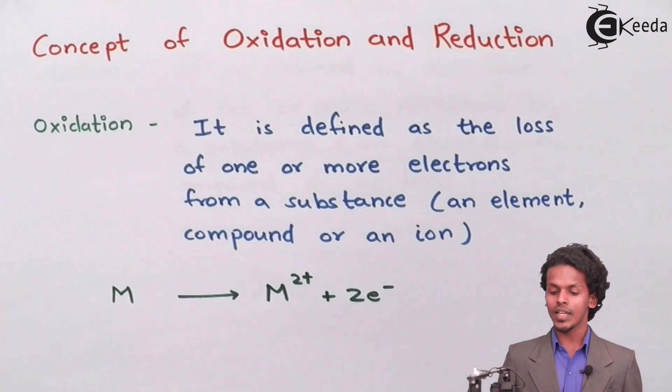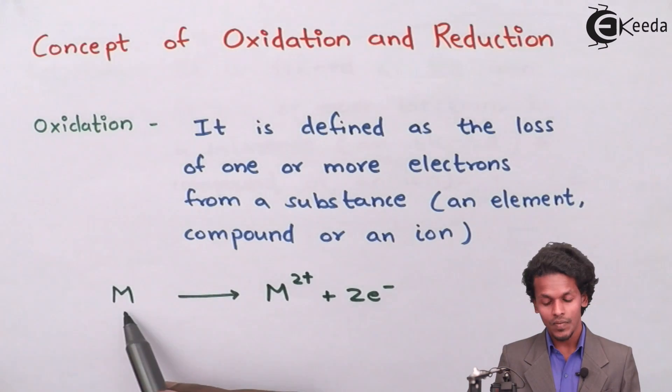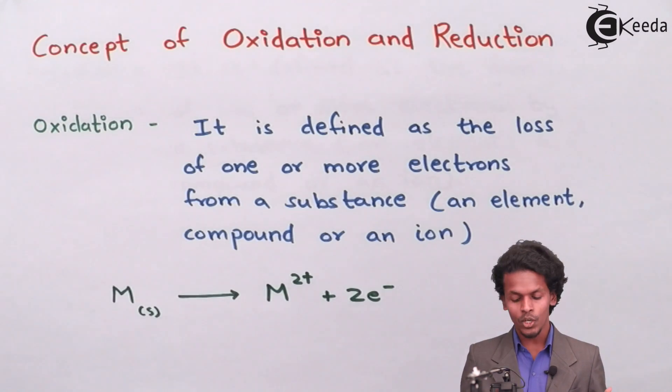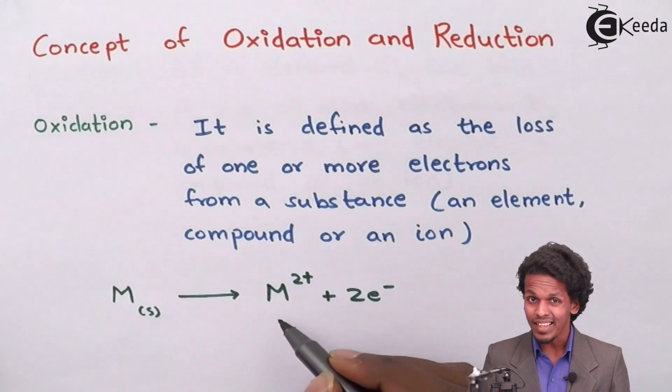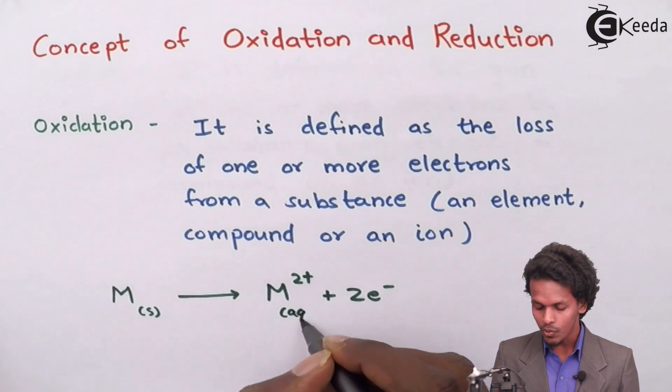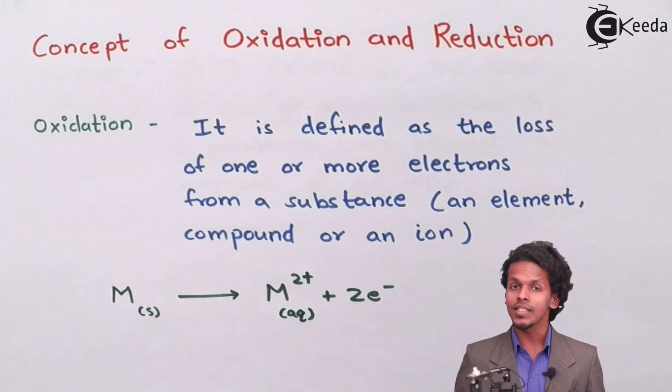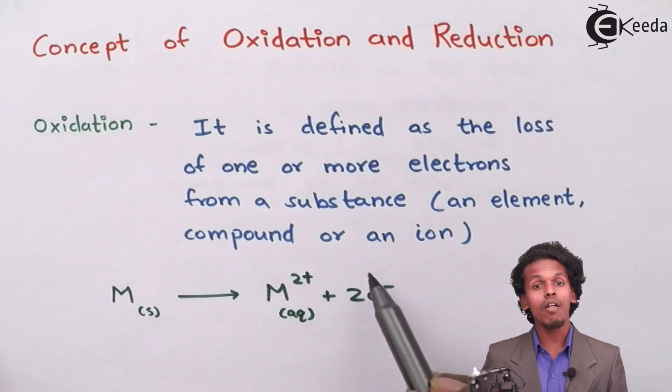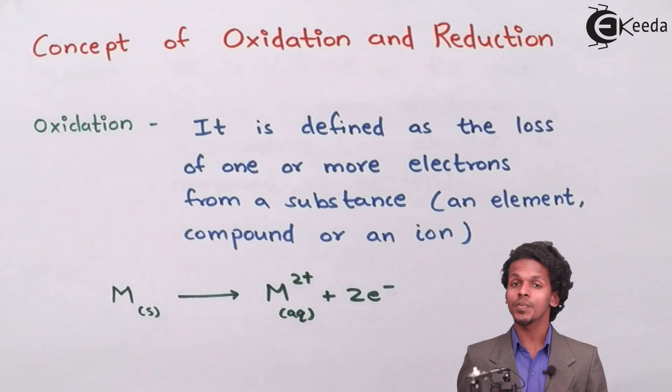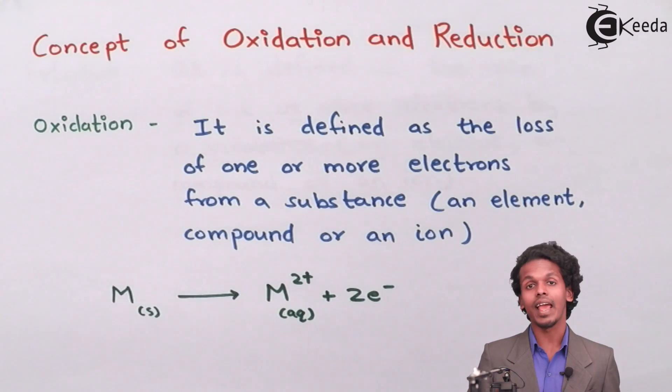So in this process, as you can see, the metal which is in solid form has now been converted into a metal ion which is having a 2+ charge, which could be in aqueous solution. In this process, the electrons have been lost by the metal, and since the electrons have been lost by the metal, the metal has undergone the oxidation process.